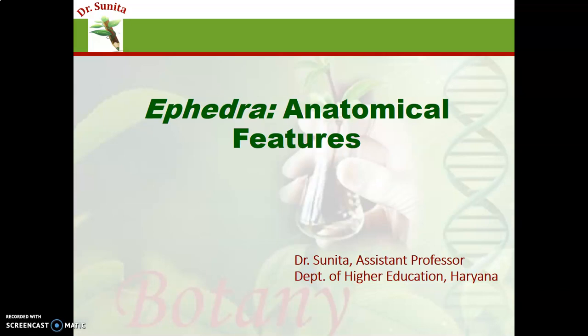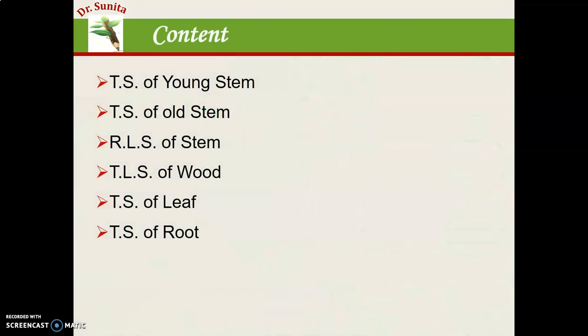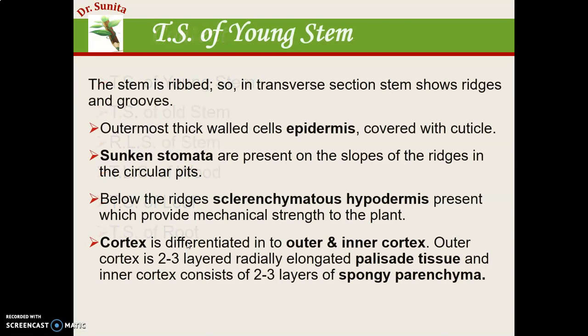Hello students. Today we cover the topic of anatomical features of Ephedra. In the last lecture we covered the morphological features. The contents of this lecture are the TS of young and old stem, RLS of stem, TLS of wood, TS of leaf, and TS of root.